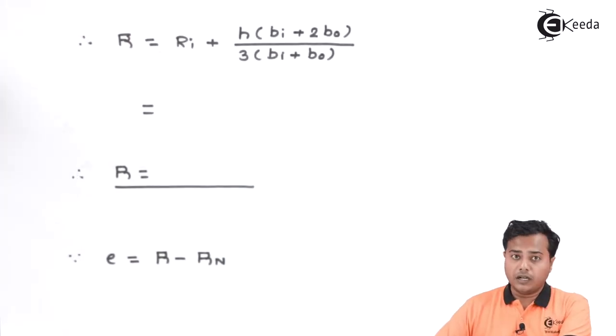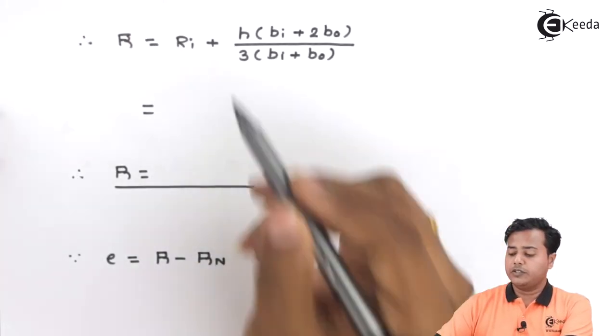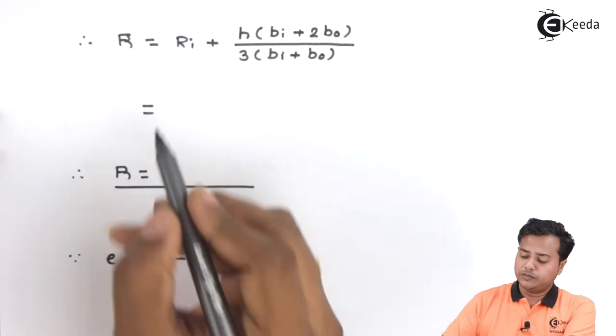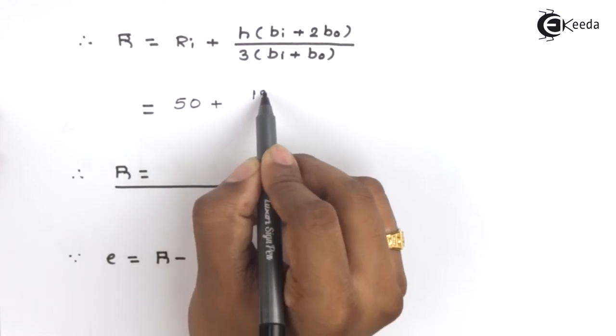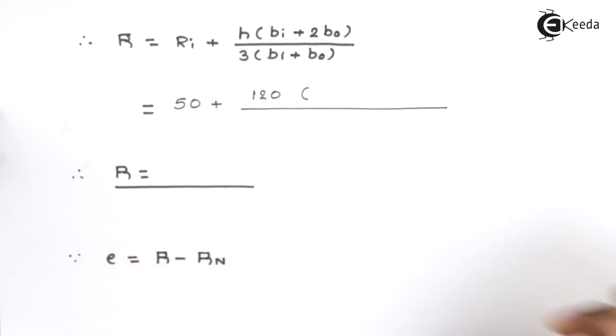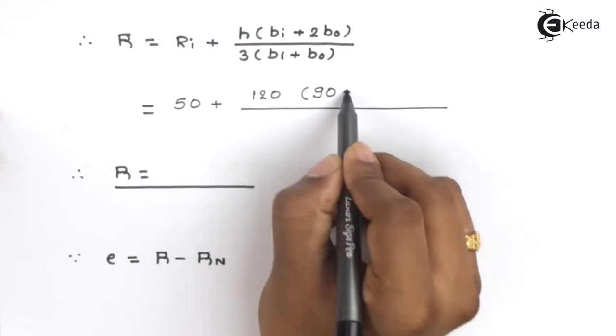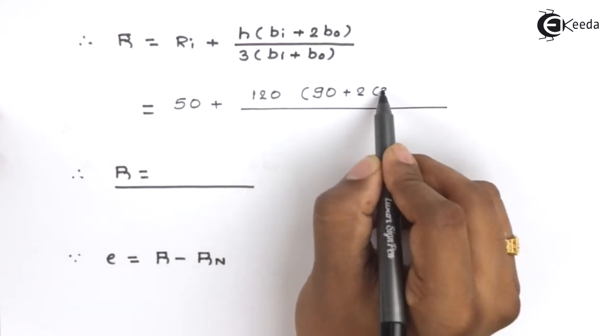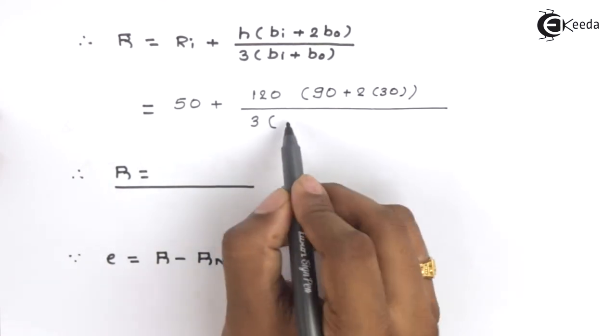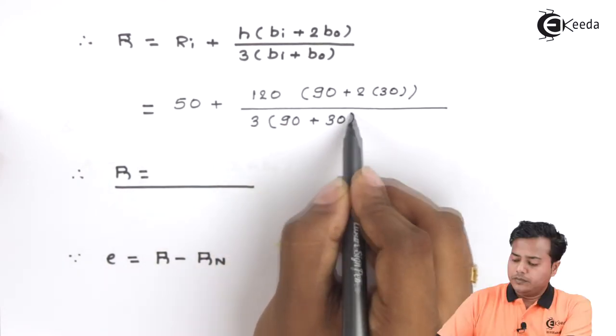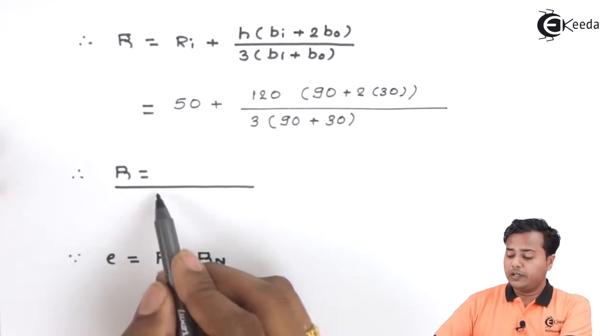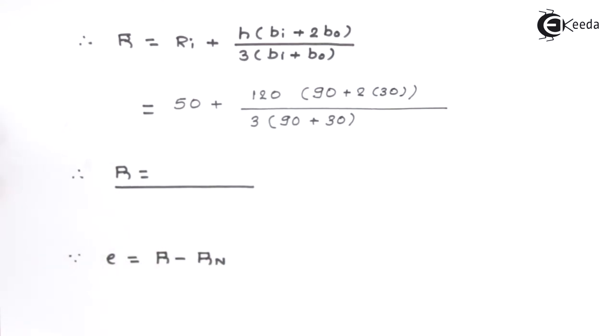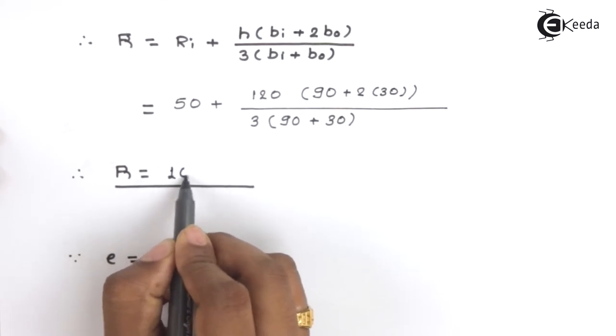The second expression which is R that we need to find out is based on this particular expression. Here, Ri is 50 plus 2 times 30. After evaluating this particular expression, we get value of R is equal to exactly 100 millimeter.